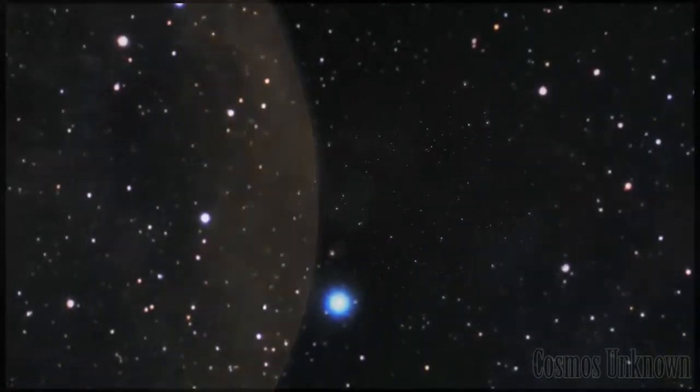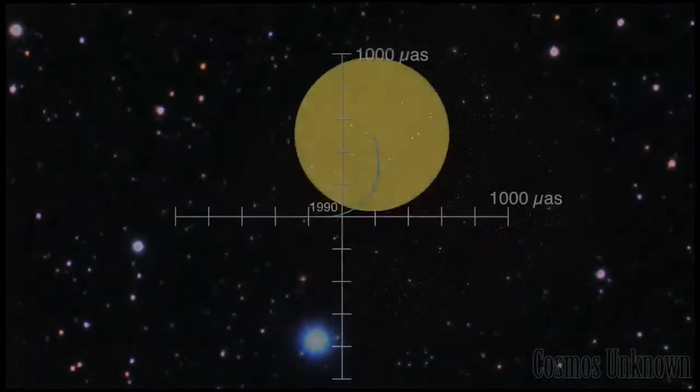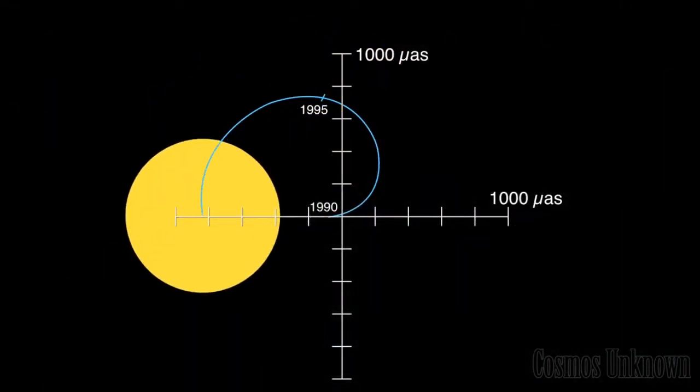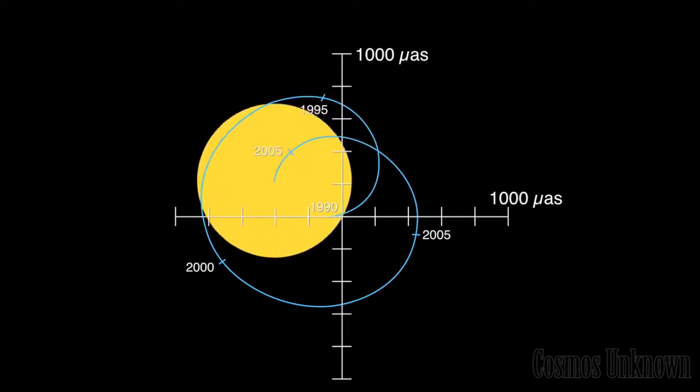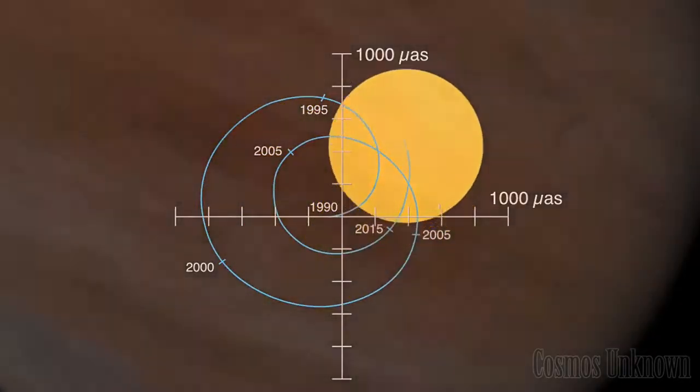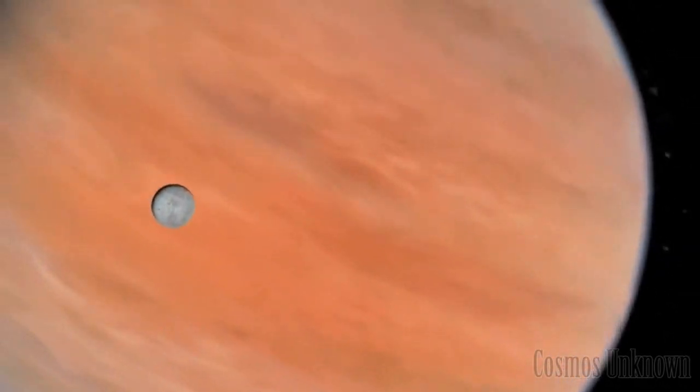Occasionally, these objects fall toward the Sun, and some gain enough velocity to reach so-called hyperbolic orbits. These trajectories will eventually take them out of the solar system, unless they are influenced by another gravitational encounter with a giant planet, like Jupiter.